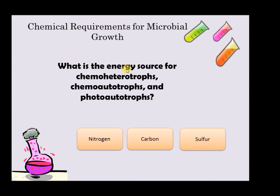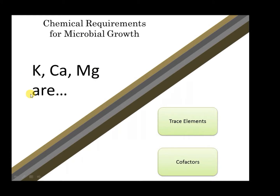What is the energy source of chemo-heterotropes, chemo-autotropes, and photo-autotropes — nitrogen, carbon, or sulfur? Now, these elements are trace elements or cofactors.